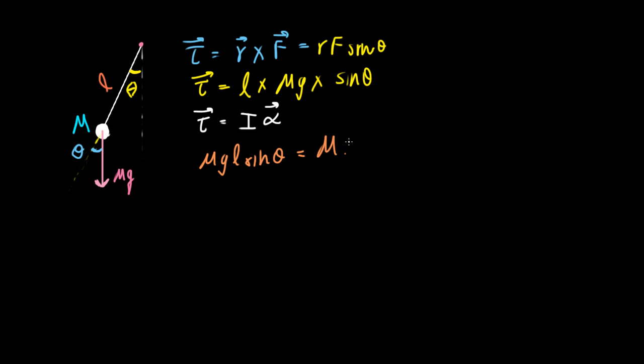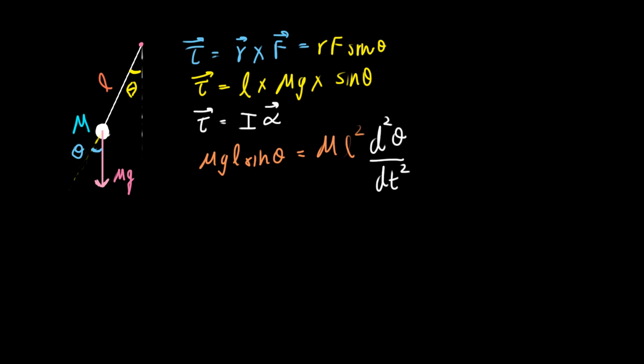That's M times L squared, and alpha is d²θ/dt². So we can cancel this M here, you can cancel one L, this becomes just an L. And for all practical purposes, sin θ is approximately equal to θ as long as θ is small, and that's why we assume that it is small.